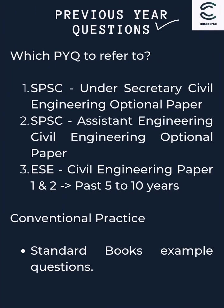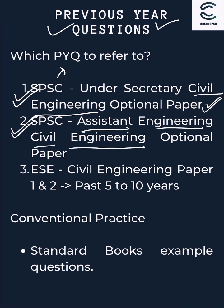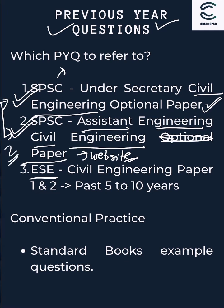For previous year questions, refer to SPSC. For the civil engineering optional in SPSC, I didn't find the questions on their website, but I'm looking for them at home — if I find them I'll upload them. You can also refer to the SPSC assistant engineering civil engineering paper, and there is a compulsory civil engineering paper available on the SPSC official website for download. For the Engineering Service Exam, the past 5 to 10 years of questions are very useful.